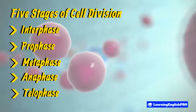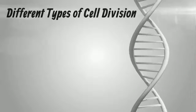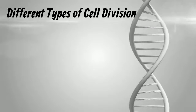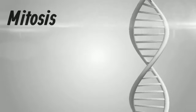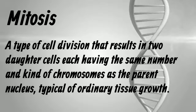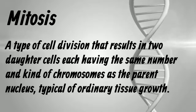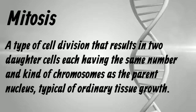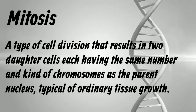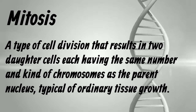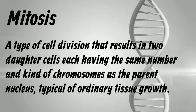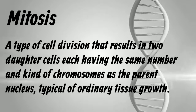With cell division, there are two different types. Firstly, we have mitosis. This is a type of cell division that results in two daughter cells, each having the same number and kind of chromosomes as the parent nucleus. This is typical of ordinary tissue growth.